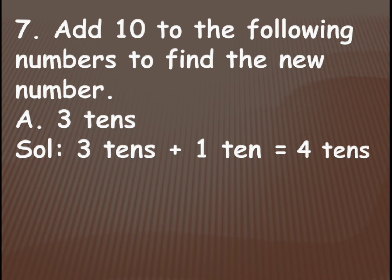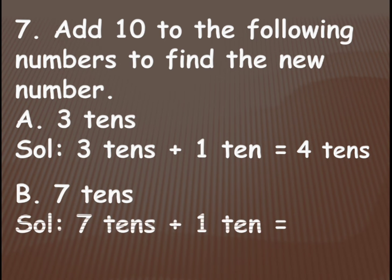Next one: 7 tens. For this 7 tens you need to add 1 ten. 7 tens plus 1 ten — 7 plus 1 — 7 tens plus 1 ten gives us 8 tens, which in number form is 8, 0 — 80.